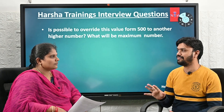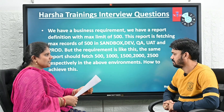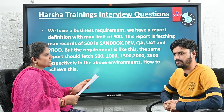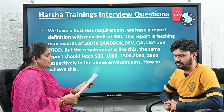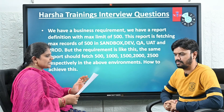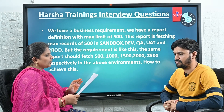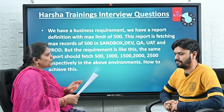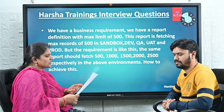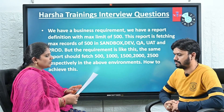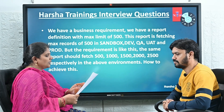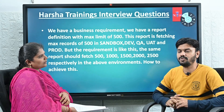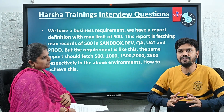Now let's look at a business scenario. We have a Report Definition Rule with a max limit of 500, fetching 500 records across sandbox, dev, QA, UAT, and production. But the requirement is that the same report should fetch 500, 1000, 1500, 2000, and 2500 records respectively in those environments. How do we achieve this?